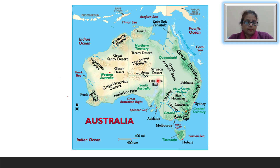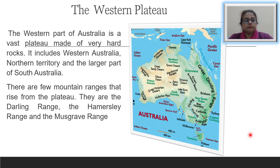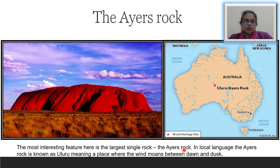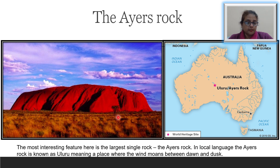The most interesting part of this western plateau is Ayers Rock, which in the local language is known as Uluru, meaning 'a place where the wind moans between dawn and dusk.' This single large rock is so big that a person will have to walk nearly 10 kilometers to go around it.